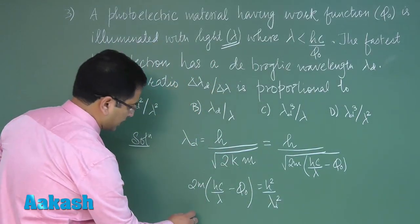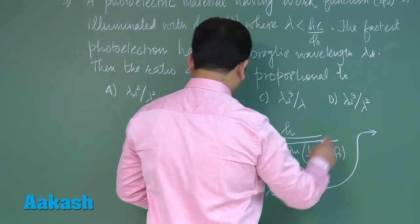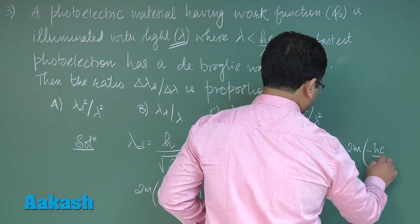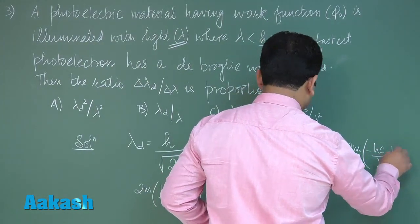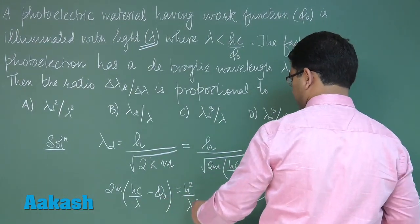Now let me differentiate, so let's do it here. That comes to 2m is constant, minus hc by lambda squared d lambda, straightforward. The work function is constant, so the derivative would be zero.